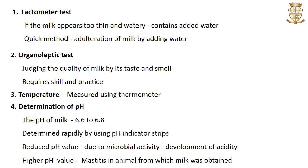The next is the determination of pH. The pH value or hydrogen ion concentration gives a measure of the acidity of milk. The pH of normal milk ranges from 6.6 to 6.8. The pH of milk can be determined rapidly using pH indicator strips. A reduced pH value is due to development of acidity, while a higher or alkaline pH indicates that the animal from which the milk was obtained is suffering from mastitis. A reduced or higher pH value indicates bad quality milk.